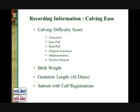Calving Difficulty Scores should be collected by stud breeders each time a calving occurs, with the level of calving difficulty scored on a 1-6 scale: 1 being unassisted, 2 easy pull, 3 hard pull, 4 surgical assistance, 5 malpresentation, and 6 elective surgical.